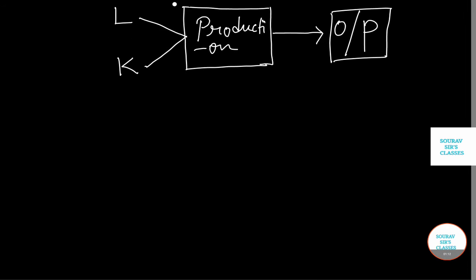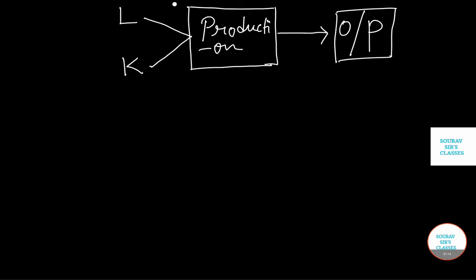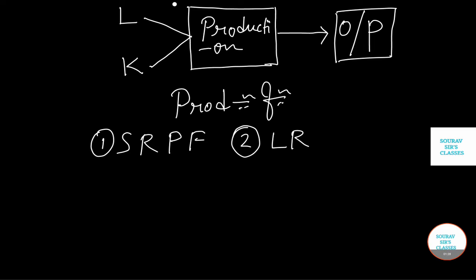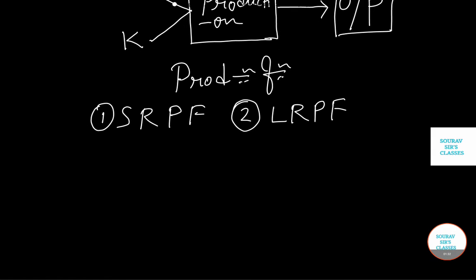Now this production function can be of two types. One can be short run production function and another can be long run production function. But before going to that we need to know what is production function. The relationship between inputs and outputs is called the production function.